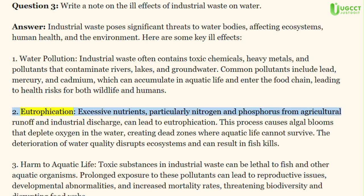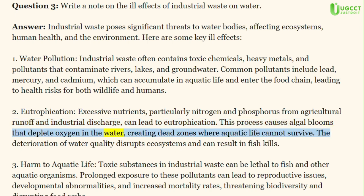2. Eutrophication: Excessive nutrients, particularly nitrogen and phosphorus from agricultural runoff and industrial discharge, can lead to eutrophication. This process causes algal blooms that deplete oxygen in the water, creating dead zones where aquatic life cannot survive. The deterioration of water quality disrupts ecosystems and can result in fish kills.